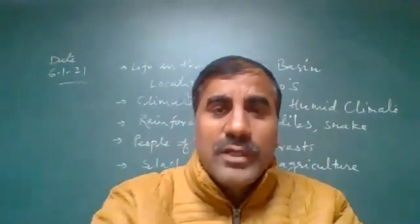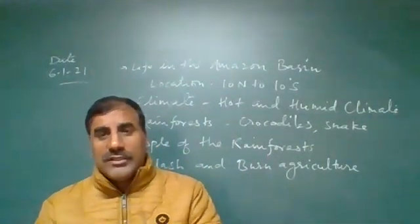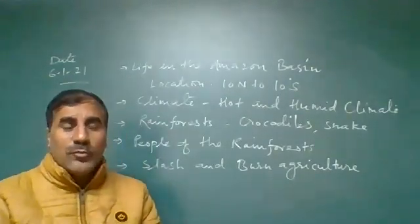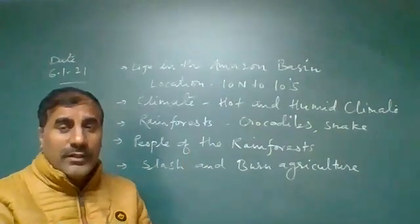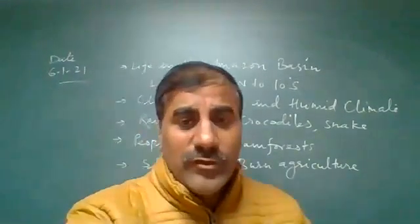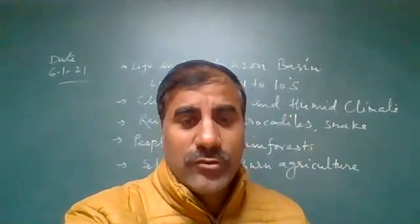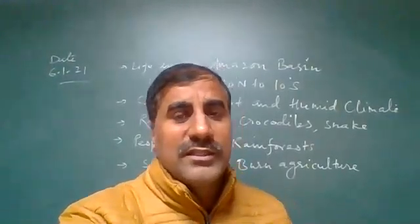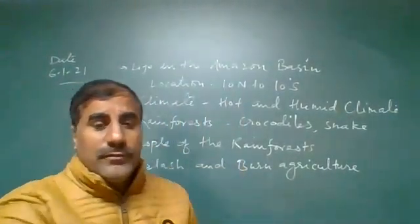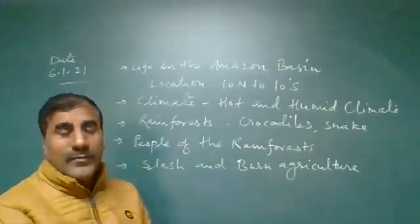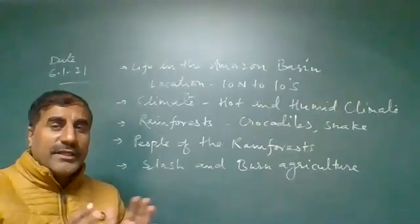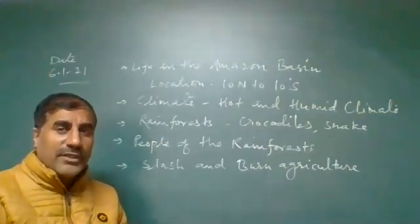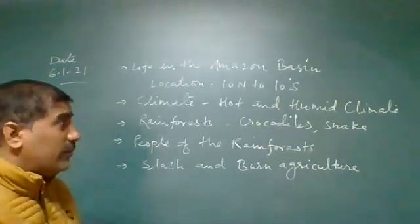Yesterday we discussed that there are three major zones of the earth. One is the Tropical Zone, divided into two parts: Tropical and Subtropical. After that, we discussed the Temperate Zone, divided into Northern and Southern Temperate Zones. And then the Frigid Zone, near the Northern and Southern Poles — a very cold climatic area.